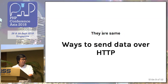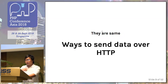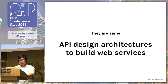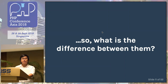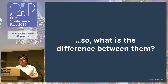Basically, REST and GraphQL are the same. They are both ways to send data over HTTP, so maybe there's no difference. They also both offer API design architecture to build web services. So basically they are the same — what is the difference between REST and GraphQL? Because when we use REST and when we use GraphQL, we notice there is a difference between them.